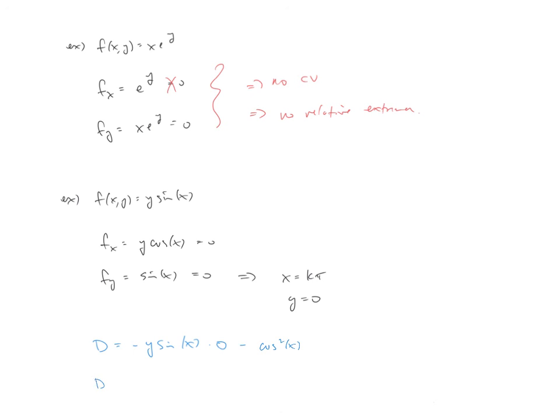So if we test D now at k pi, comma 0, you can see this whole thing is wiped out, and all we're really dealing with now is a negative cosine squared. We know that cosine squared is bounded between 0 and 1, and with a negative sign out in front of it, that's going to imply that this D is going to be less than 0, no matter what. Therefore, we have saddle points at all places, k pi 0.